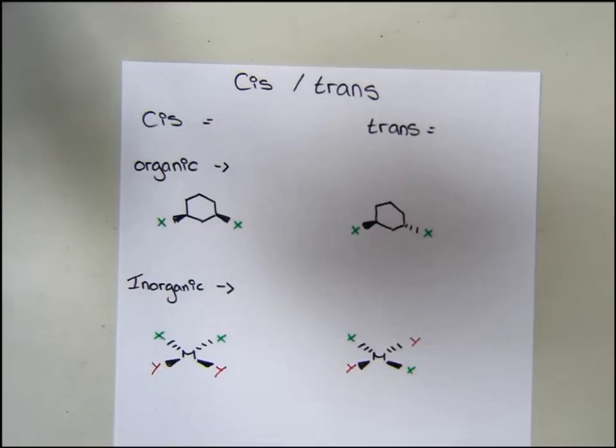This video will be all about assigning cis and trans isomers as well as fac and mer isomers. These are the nomenclature used to describe the positions of atoms relative to each other in a molecule. This naming system is commonly used in inorganic chemistry, but it can be used in organic chemistry too.